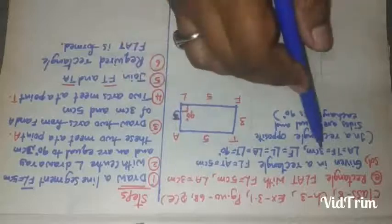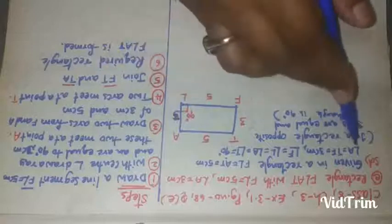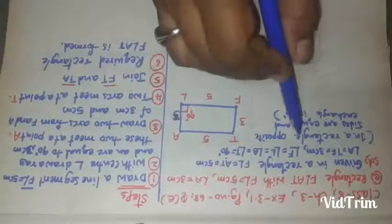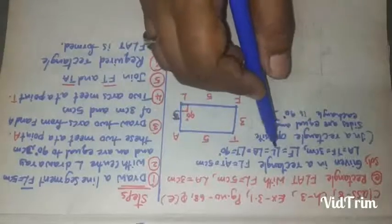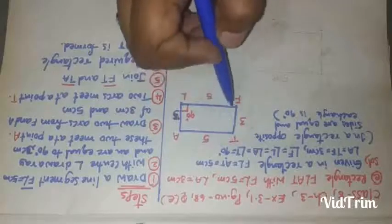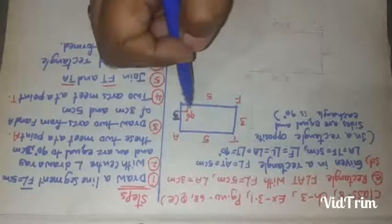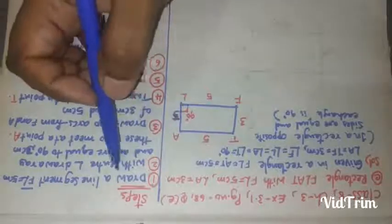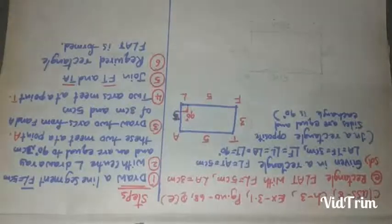LA is given as 3 centimeters. Opposite sides are equal, so LA and TF both are equal to 3 centimeters. Each and every angle — angle F, angle A, angle T — all angles are 90 degrees, which we can also call a right angle.